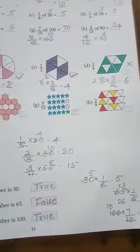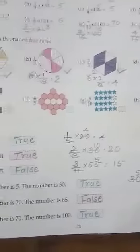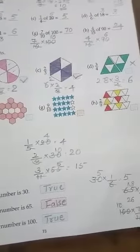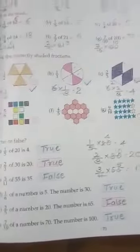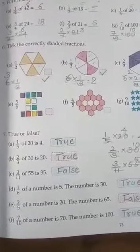The number is 50. 1 by 10 of a number is 20. 2 by 10 of a number is 70, the number is 100.